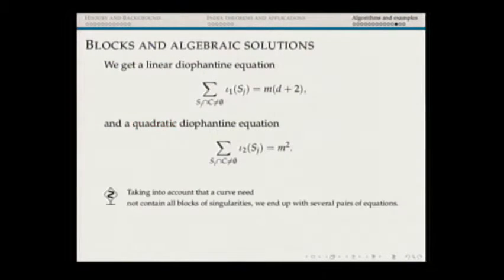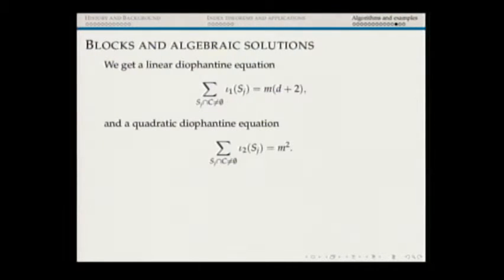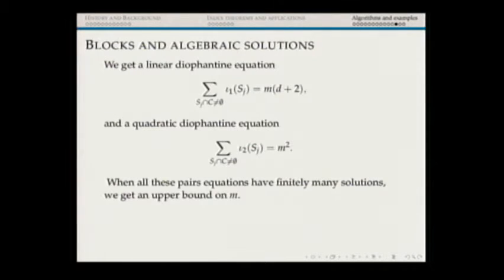Things are more complicated because in some cases we don't know whether the curve passes through a singularity smoothly or as a node. So we consider three subcases for each relevant block: smooth branch in one direction, smooth in the other direction, or a node. If there are several such blocks, we may have 30 or 50 pairs of equations instead of one pair. When all these equations have finitely many solutions, we get a bound — it happens quite often.